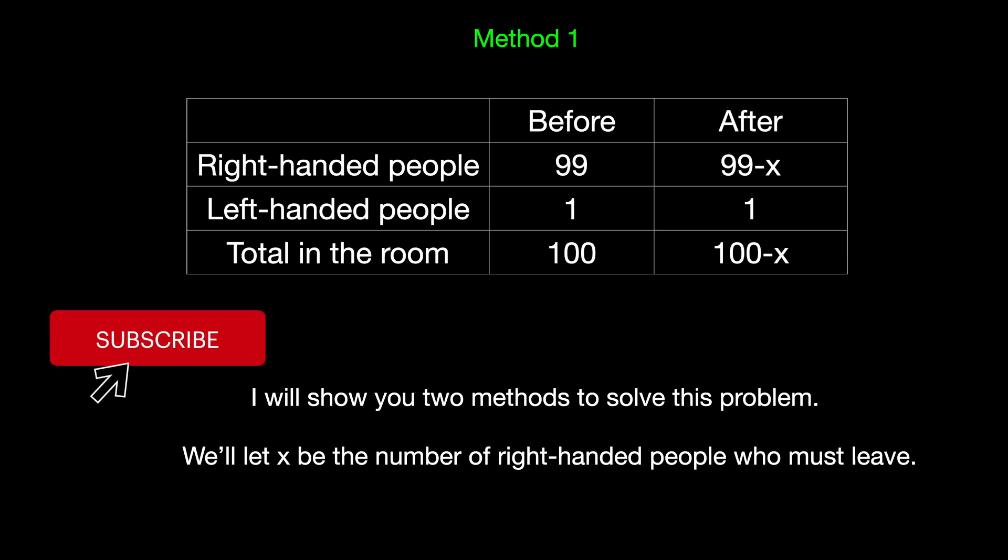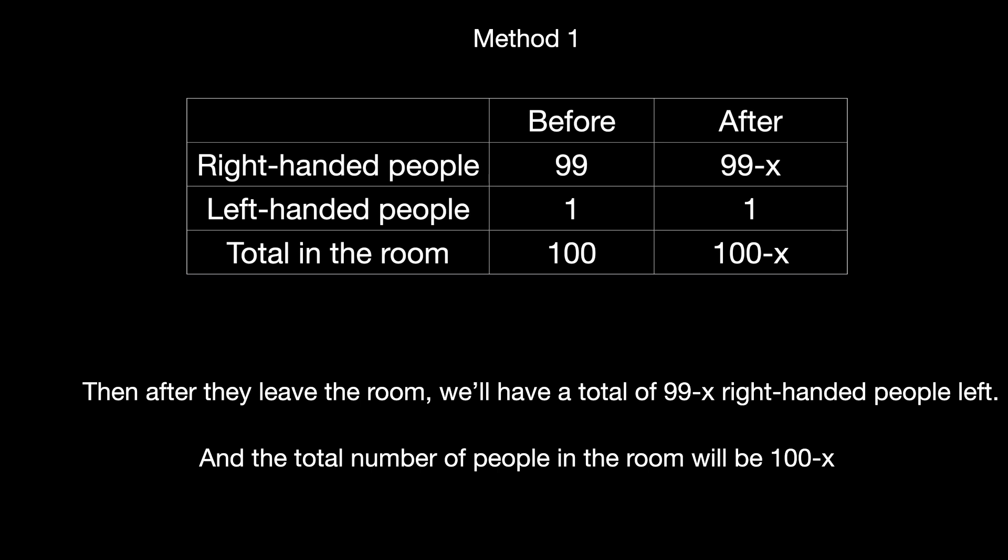We'll let x be the number of right-handed people who must leave. Then after they leave the room, we'll have a total of 99 minus x right-handed people left. And the total number of people in the room will be 100 minus x.